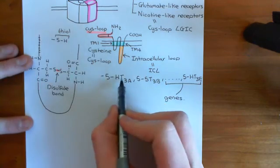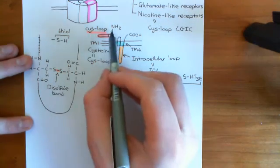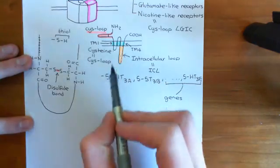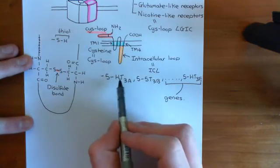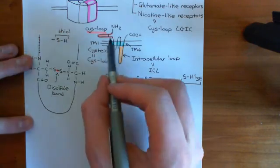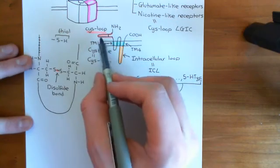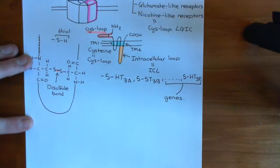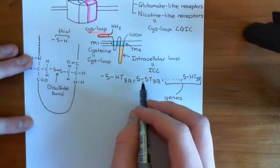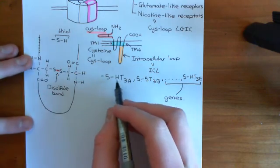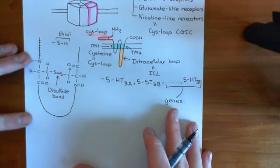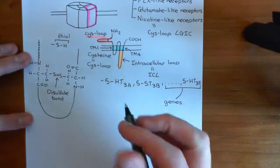We can build these two proteins, which will have a membrane-spanning topology like this, and they will be slightly different — not identical. They will both have this core structure, but they'll have different primary sequences of amino acids. The question then is how can we pentamerize these together to make a full 5-HT3 receptor?